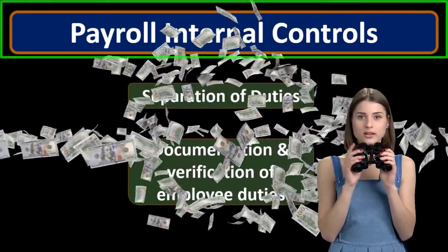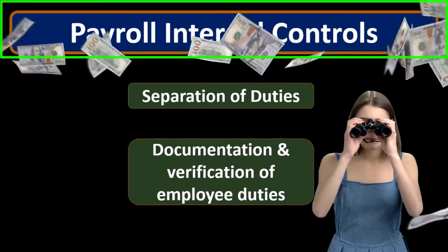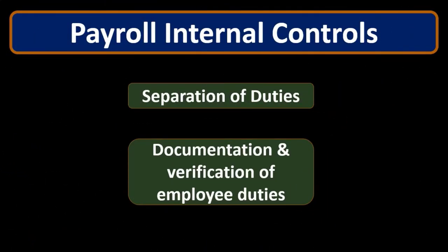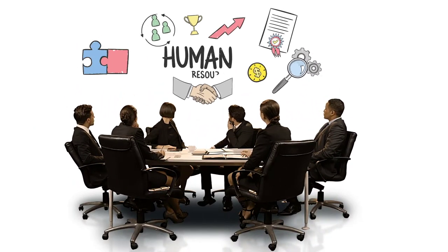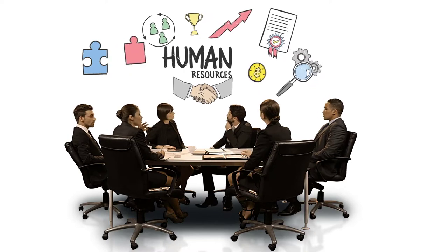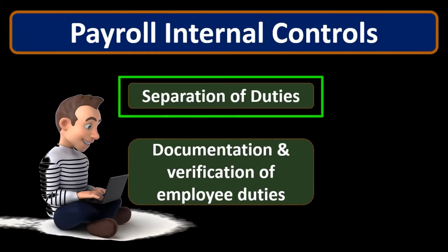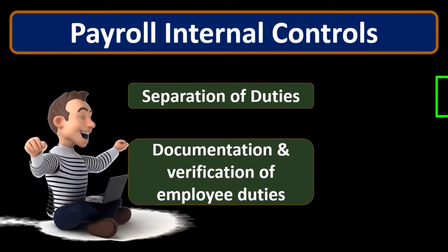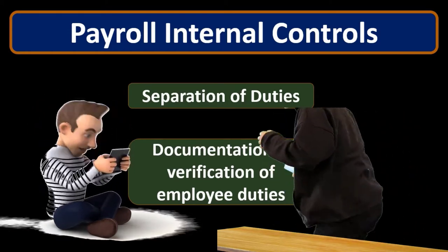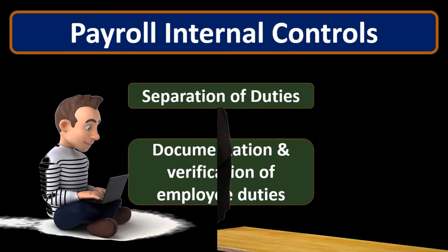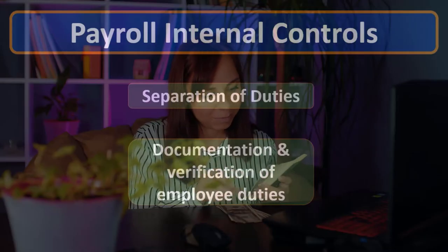When considering payroll internal controls, we know they will differ from company to company, and we'll have more internal controls as companies grow because we need more controls to safeguard the payroll process — a process that can be subject to fraud. One of the major internal controls to always consider is the separation of duties, so that if fraud is taking place it is more likely to be caught, rather than having one individual in charge of the full payroll process.